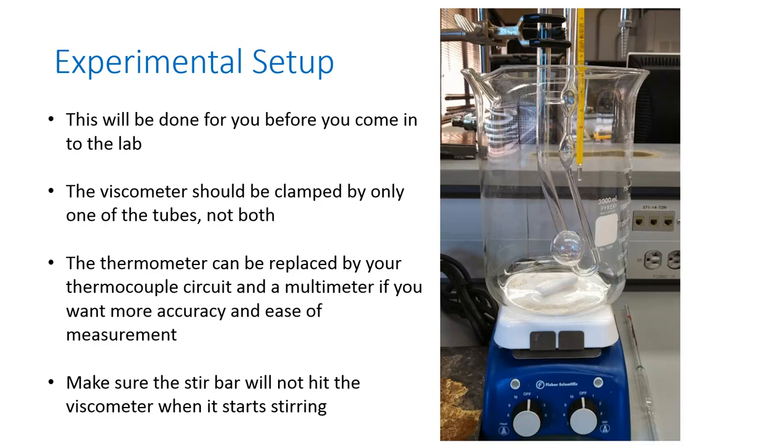The viscometer should be clamped into the water bath by the clamp you see there, which is attached to a ring stand. You should only clamp one of the tubes, the thicker one. You should not clamp across both tubes because then the viscometer won't sit straight up and down. It's very important that it sits straight up and down for proper function.